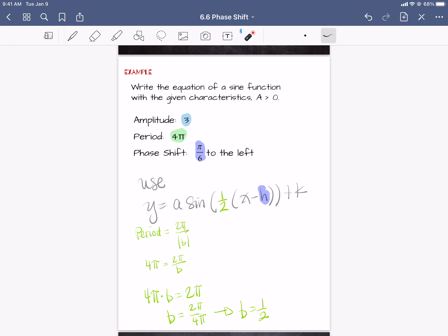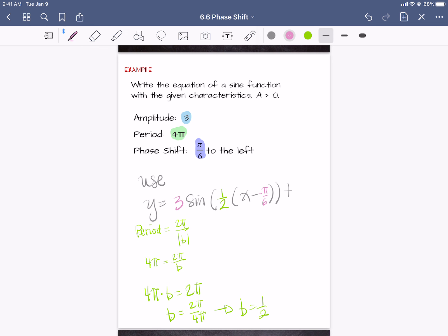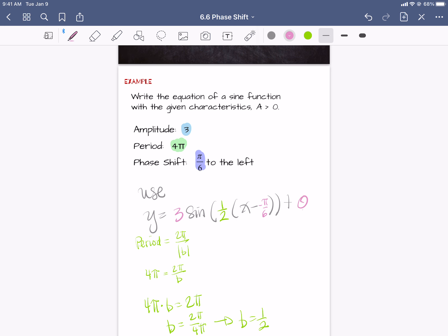So my a value is 3, and the h value is minus or negative π over 6. And then there is no k value, zero, didn't shift up. So we can clean this up and it's going to look like this. And that's it.